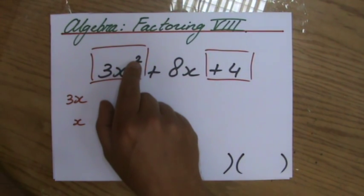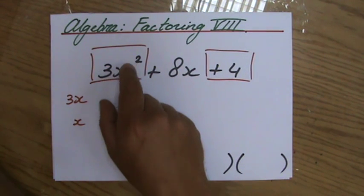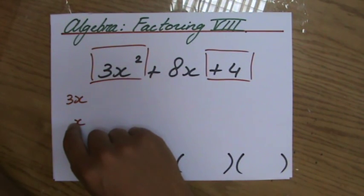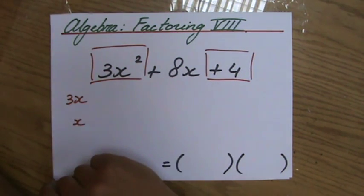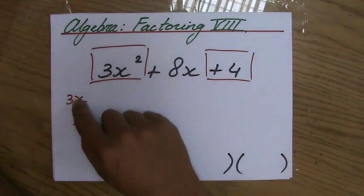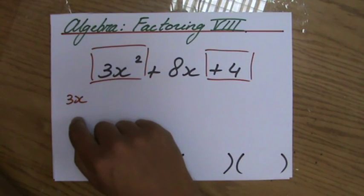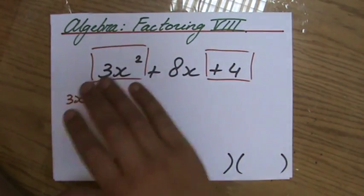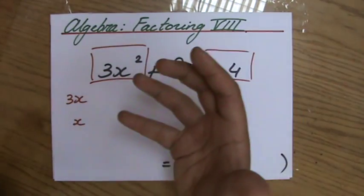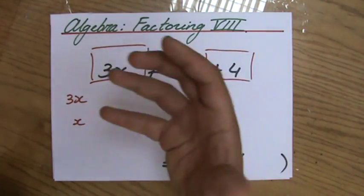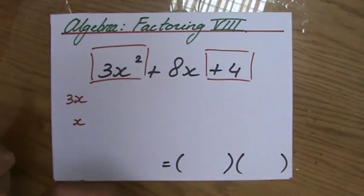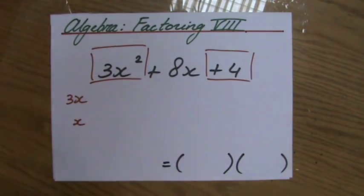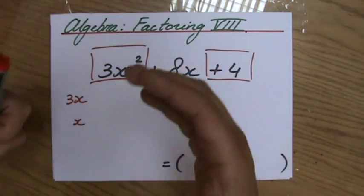If that would be 4x squared, for instance, then this could be 2x times 2x, because 2x times 2x is 4x squared. Or it could be 4x times x, because 4x times x is also 4x squared. So you have more combinations possible. But for 3x squared, I only have one possible combination: 3x times x.